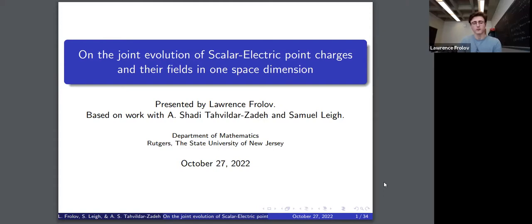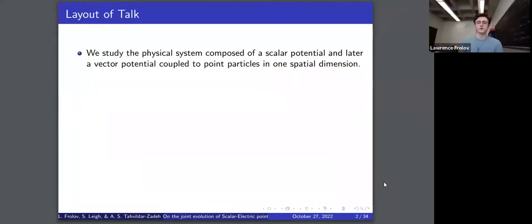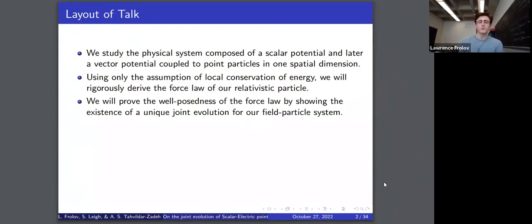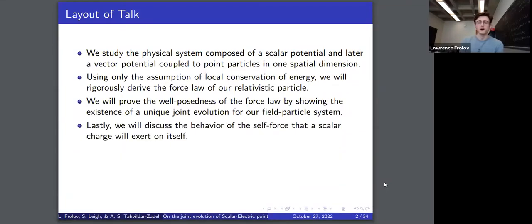I'm presenting this research based on work I did with my advisor Shadi and partly with Samuel Lee. The overall goal is to study the physical system composed of a scalar potential — and later also a vector potential — coupled to point particles in one space dimension. Using just the assumption of local conservation of energy, we'll rigorously derive the force law acting on our relativistic particle, prove well-posedness by showing existence of a unique joint evolution, and discuss the behavior of the self-force, showing it is inversely proportional to and in fact restoring for the velocity.